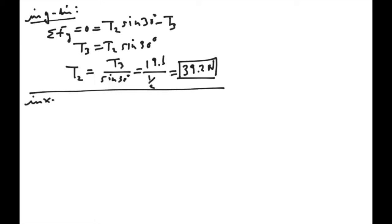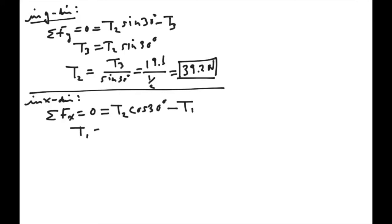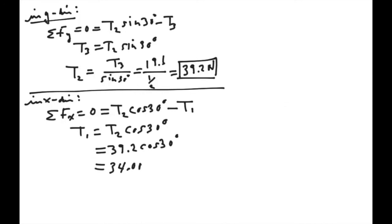If we look now in the x direction, the summation of forces in that direction should be zero as well. We have T2 cosine 30 going to the right, balanced by all of tension 1. So tension 1 equals T2 cosine 30, which is 39.2 times the cosine of 30, and that is 33.95, so approximately 34.0 Newtons. That is tension 1, which is what we wished to find — the tension in string number 1 is 34.0 Newtons.